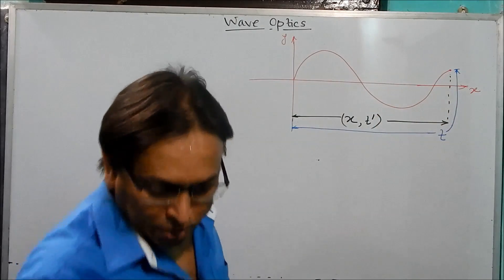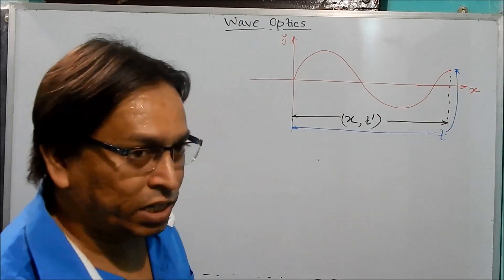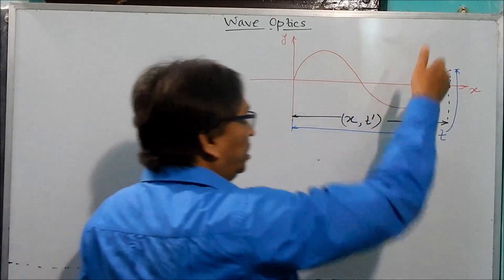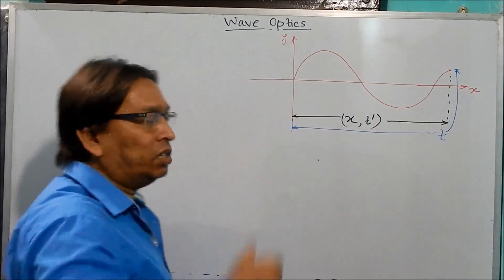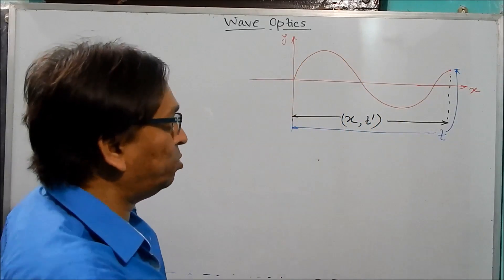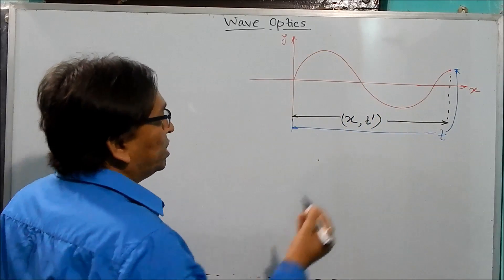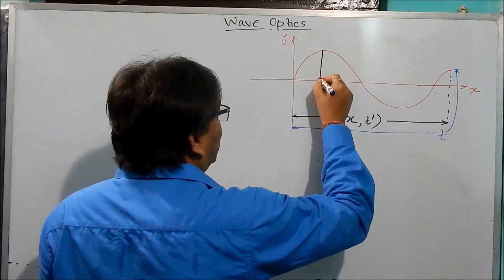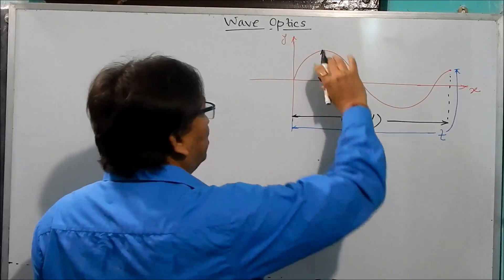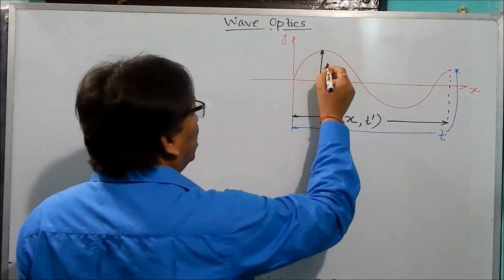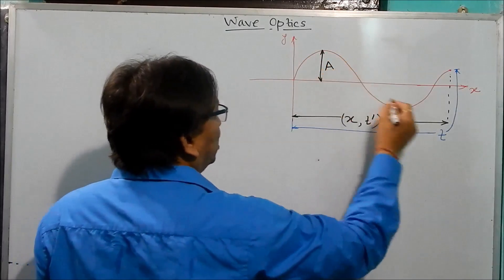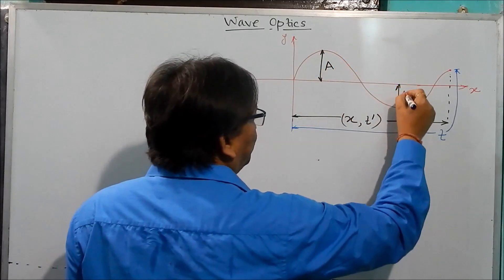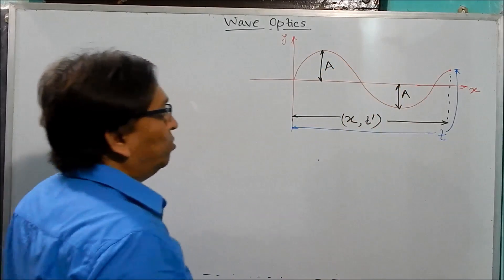Since this is the case of SHM, basically all those particles or electric field or whatever are actually executing SHM about their mean position. We can say that this is the amplitude - the amplitude means the maximum oscillation. Let us call this A, so the magnitude is also A.